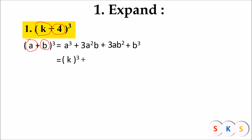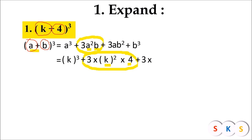Substituting a = k and b = 4, we get: a³ = k³, plus 3 × a² × b = 3 × k² × 4, plus 3 × a × b² = 3 × k × 4², plus b³ = 4³. We have now substituted the values of a and b in the formula and will proceed to simplification.